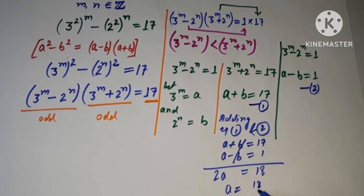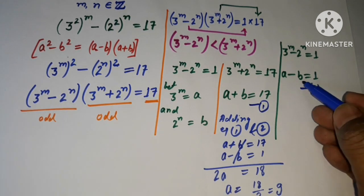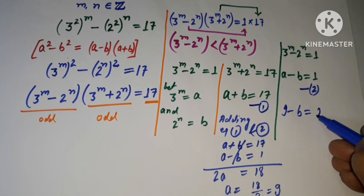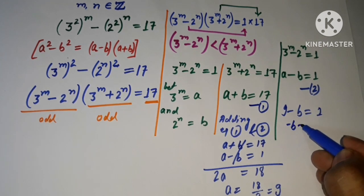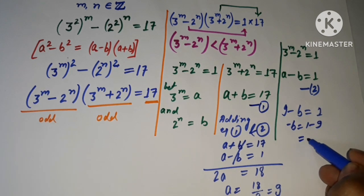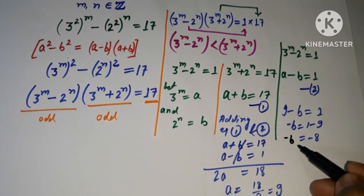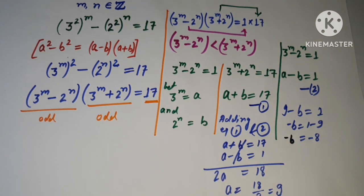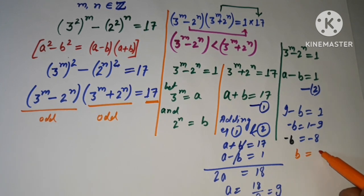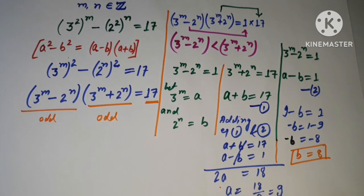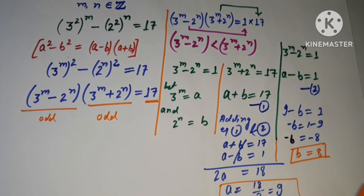We get 2a equals 17 plus 1, which is 18. So a equals 18 divided by 2, which is 9. Putting this value into equation 2: 9 minus b equals 1, so b equals 9 minus 1, which gives b equals 8.